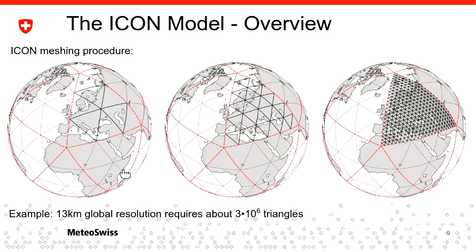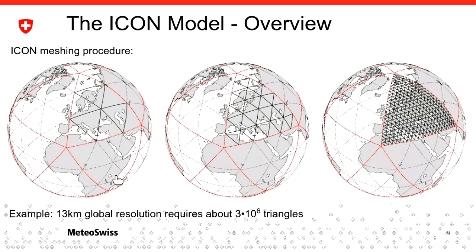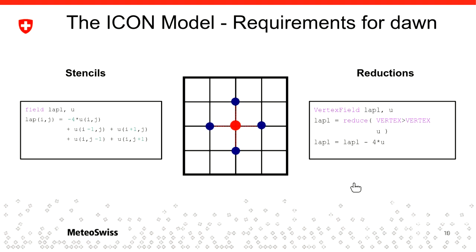You can have multiple resolutions — the meshing procedure will cut the triangles to get a finer mesh. To give some measures, for example you can have a 13-kilometer global resolution, where 13 km is the square root of the cell area of the triangle. This would correspond globally to on the order of 10^6 triangles. These were some of the requirements we needed to face when switching from Cartesian grids to triangular meshes.